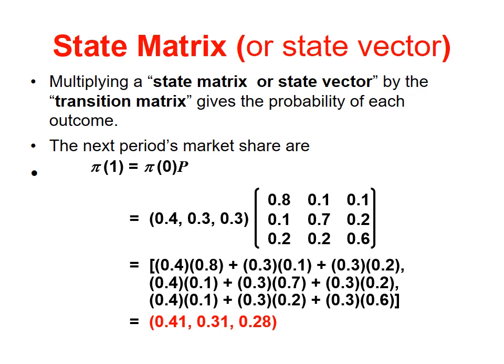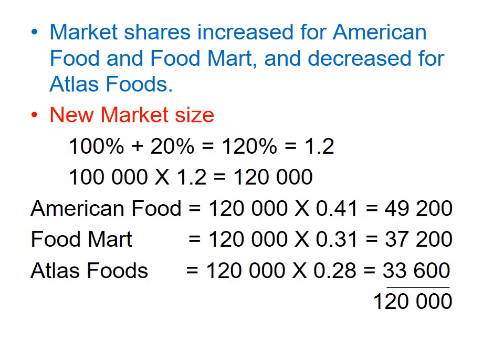For Food Mart, we multiply 0.4 times 0.1 (the first number in the second column), plus 0.3 times 0.7 (the second number in the second column), plus 0.3 times 0.2 (the third number in the second column). This represents the new market share of Food Mart. For Atlas, the same procedure is applied, and we can then compute the next market share. The sum of the three market shares for the three groceries should equal one.